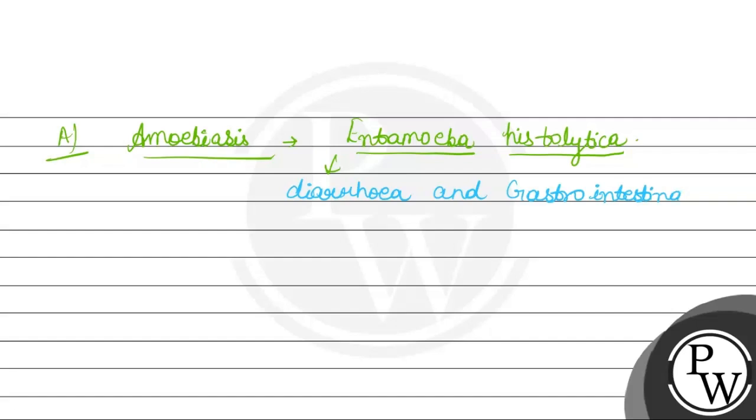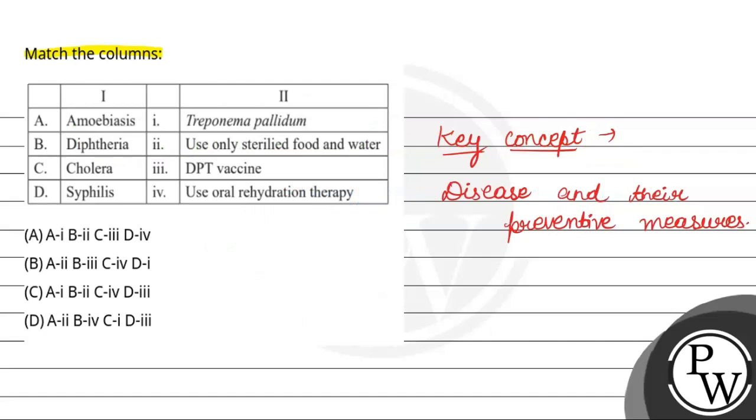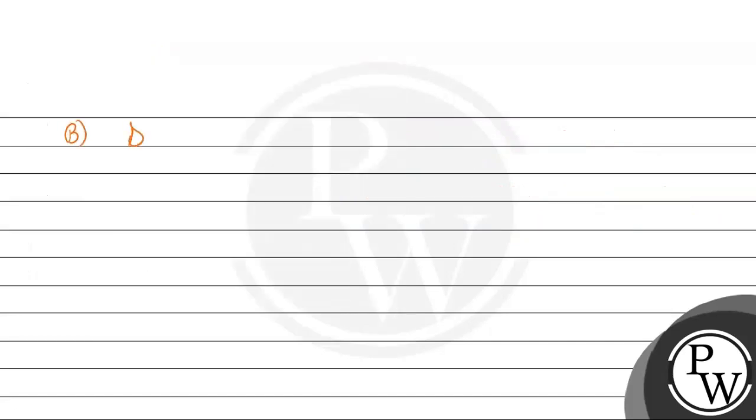Intestinal problems and diarrhea, that is use oral rehydration therapy because this is basically diarrhea. First, Amoebiasis is four.